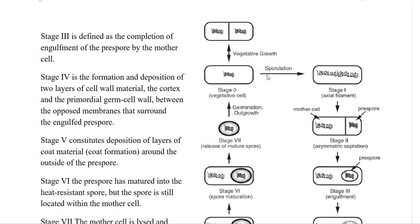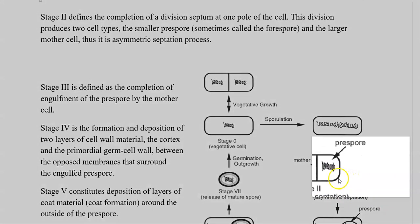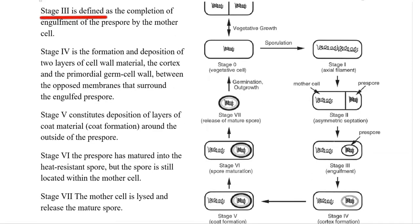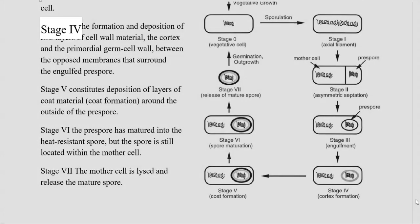Stage two defines the completion of an asymmetric division septum at one pole. This division produces two cells. Sporulation is an asymmetric septation process that takes place to complete the pre-spore that has been formed. Stage four involves the formation and deposition of layers of the engulfed pre-spore structure.